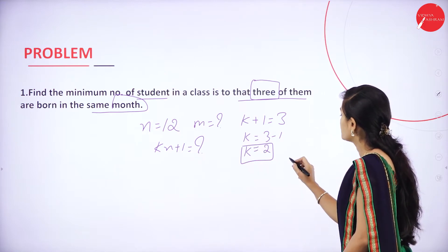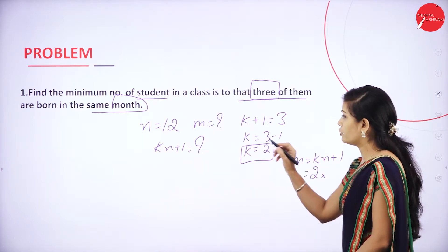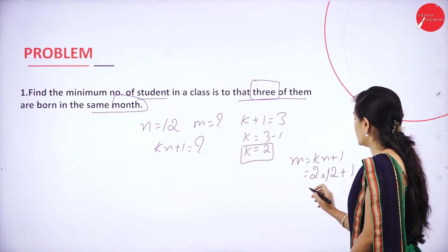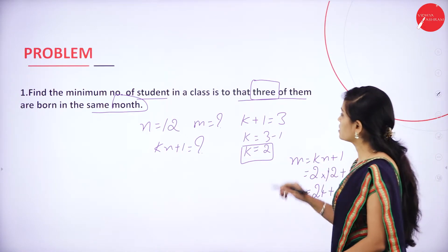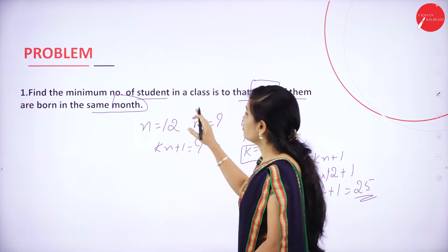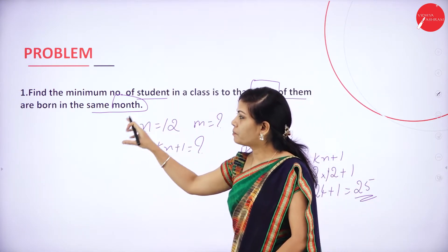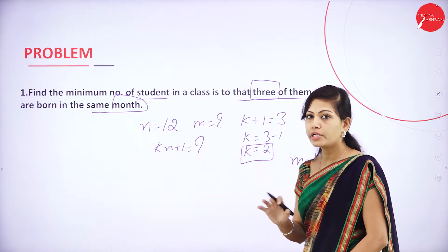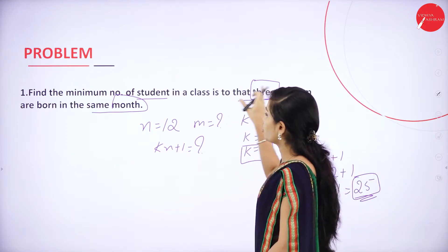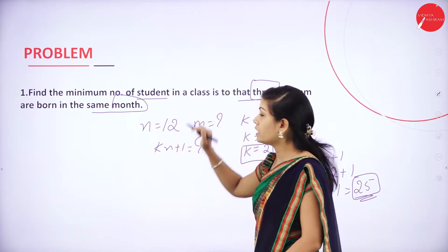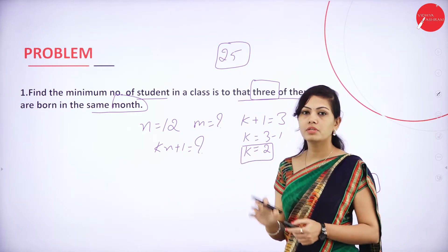Now find the value of m. So m is equal to k times n plus 1. k value is 2 and n value is 12, so 12 into 2 is 24 plus 1 is equal to 25. So 25 students — in that class 3 of them have been born in the same month. So totally the minimum number of students is 25. This is the method of pigeon hole principle.